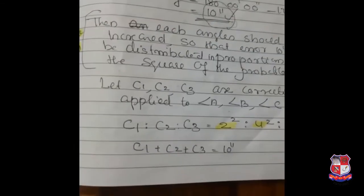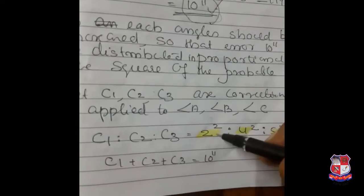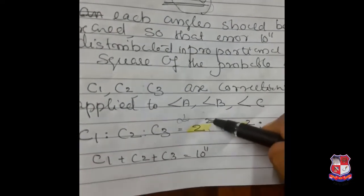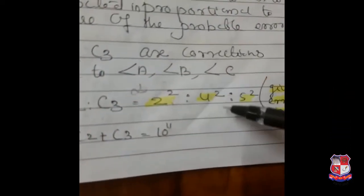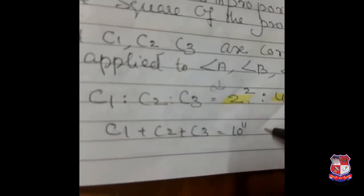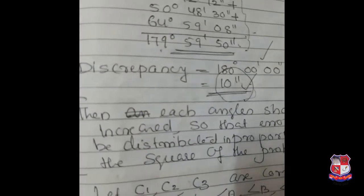So C1 : C2 : C3, according to Rule 2, is directly proportional to the square of the errors. The errors are given — we have 2², 4², 5², as given in the question. Another thing we know is that C1 + C2 + C3 is equal to the discrepancy, that is 10 seconds.